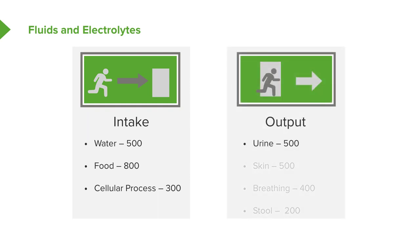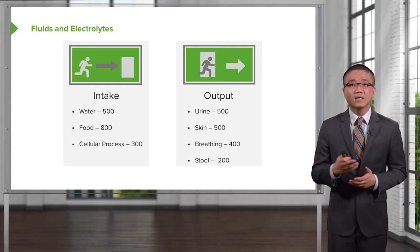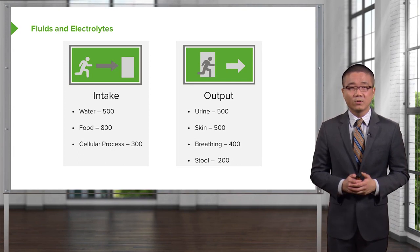In our output, we make about 500 cc of urine a day. Our skin and insensible losses account for approximately 500 cc. Breathing alone, because of the humidity, loses about 400 cc. And our stool, although mostly without fluid, still contains about 200 cc. And that's an important point because patients with diarrhea can lose a fair amount of fluid through their stools.